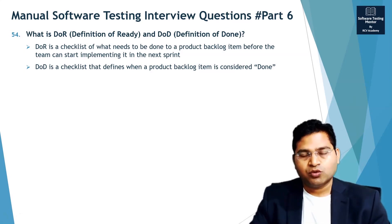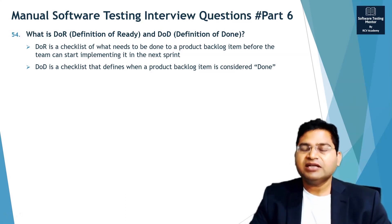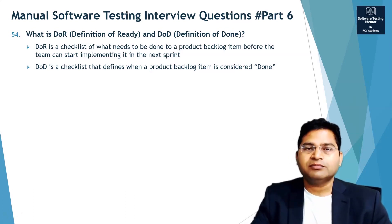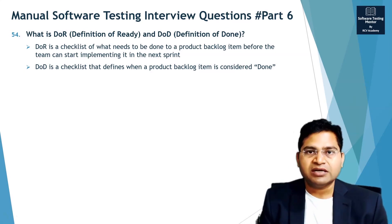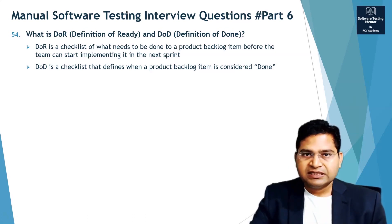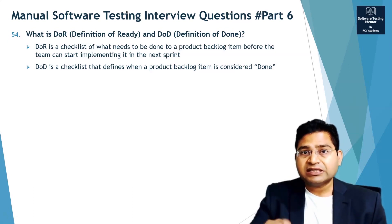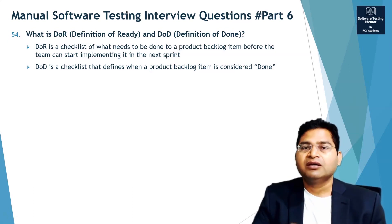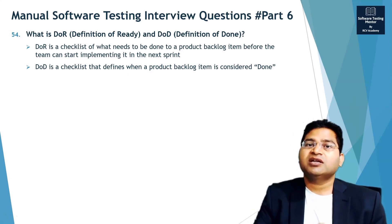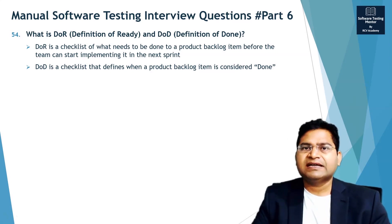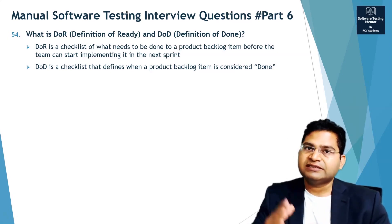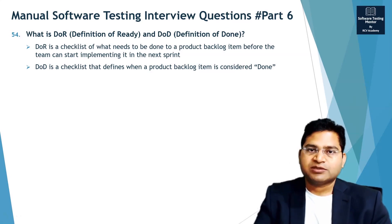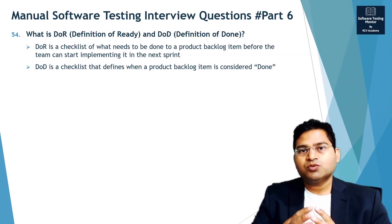Definition of Done is a checklist that correlates with exit criteria and defines when a product backlog item or user story is considered done. For example: development has completed, all testing has completed, there are no outstanding defects — these are checklist items for Definition of Done. The story has been showcased to stakeholders, stakeholders have accepted it, and no further changes are required. Once all these items are satisfied, you can consider the user story completed as part of that sprint.